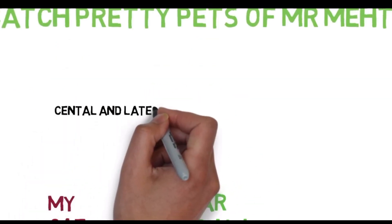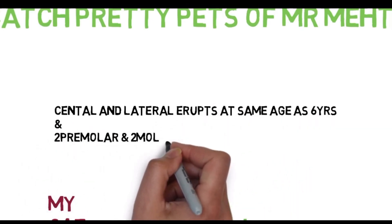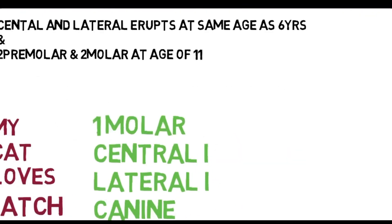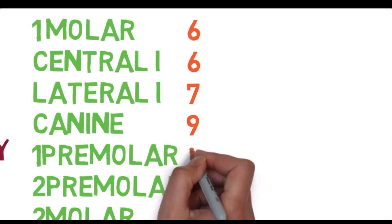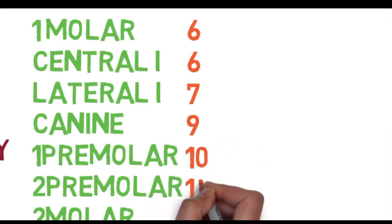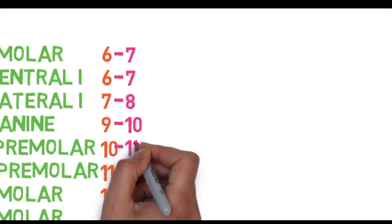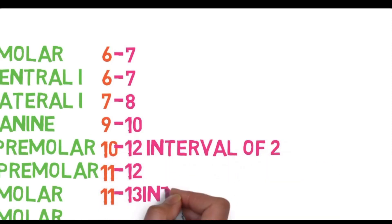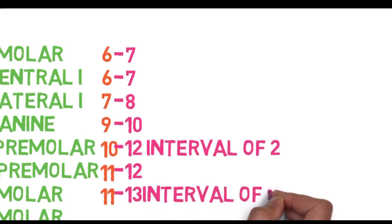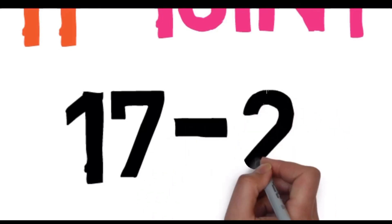The central incisor and lateral incisor erupt at the same time at age six. The second premolar and molar erupt at age eleven. Writing the numbers: 6, 6, 7 — skip 8 — then 9, 10, 11, 11. Adding one to each gives 7, 7, 8, 10, 12 — premolar is at an interval of two — then 12, 13 also at an interval of two, and the last molar at age 17 to 21.